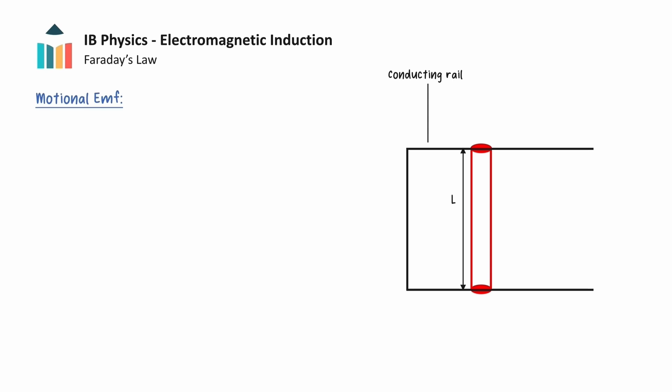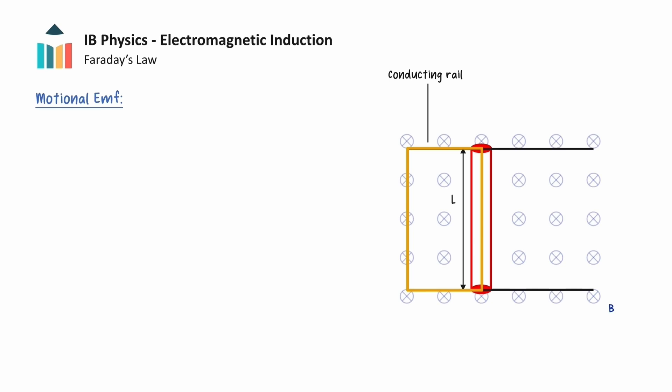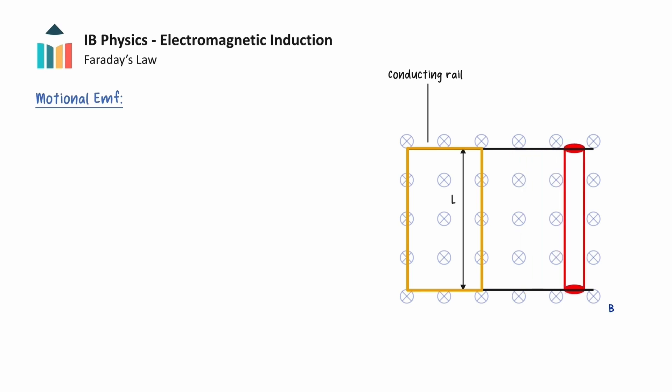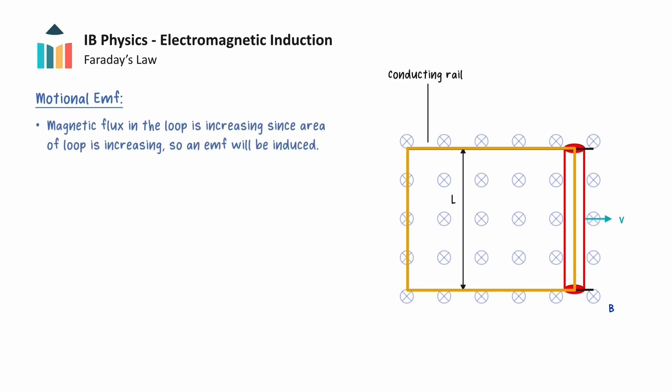We will now consider the following scenario. We have a straight conductor of length L that can move on conducting rails, which together form a conducting loop. This conductor will move into a region in which a uniform magnetic field B, acting into the page, is present. If the rod moves to the right with some velocity V along the conducting rails, the area of the conducting loop will increase with time, meaning that the magnetic flux in the loop is changing and an EMF will be induced.